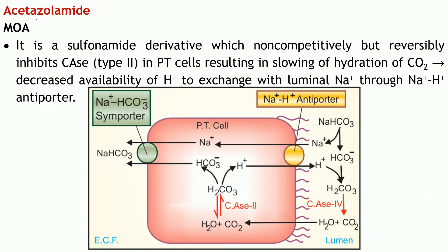The example drug in this class is acetazolamide. It is a sulfonamide derivative which inhibits carbonic anhydrase in a non-competitive manner, and the inhibition is reversible in nature. Once the drug is removed or withdrawn, the enzyme regains its catalytic property. It mainly inhibits carbonic anhydrase type 2, which is present inside the proximal tubular cells.